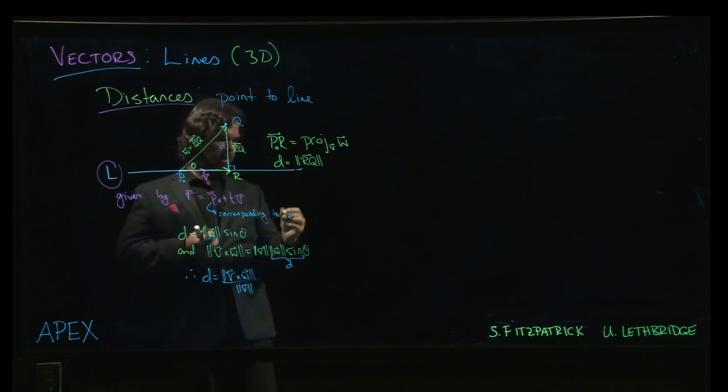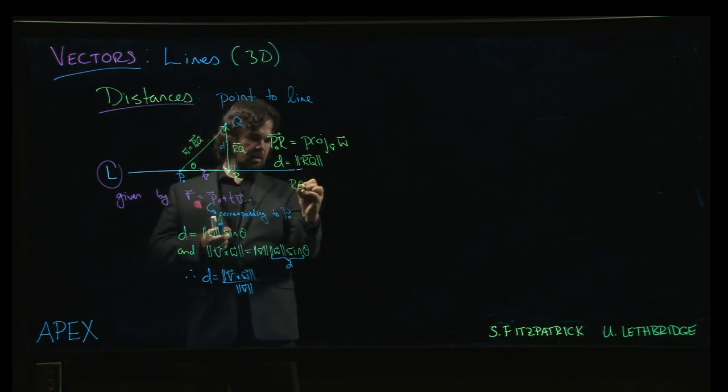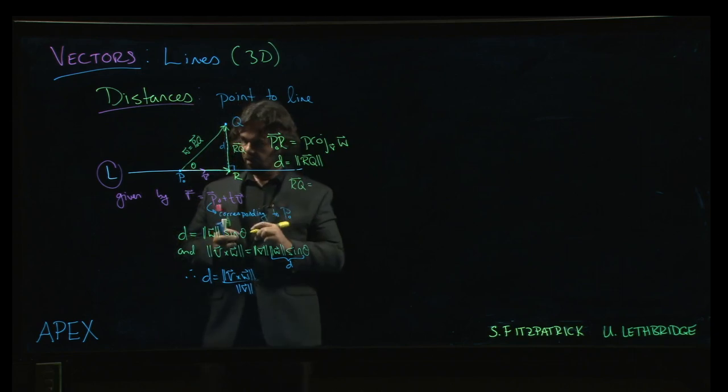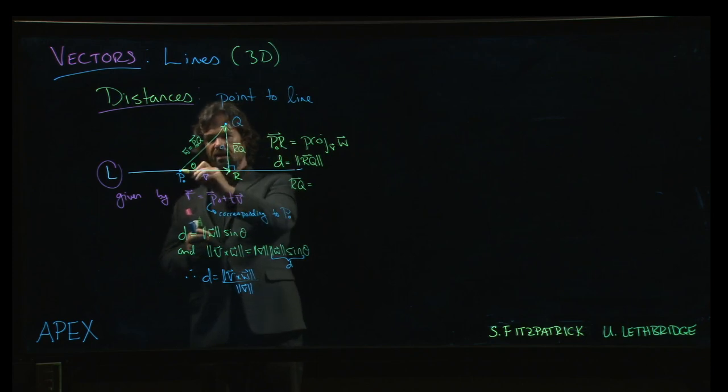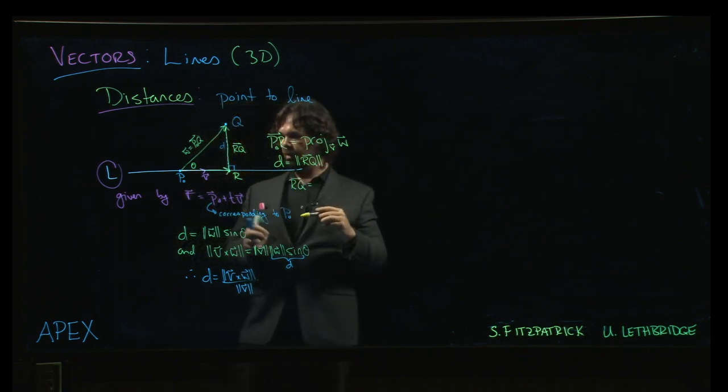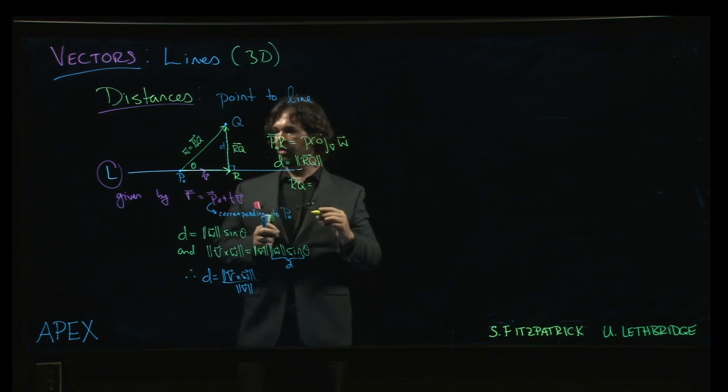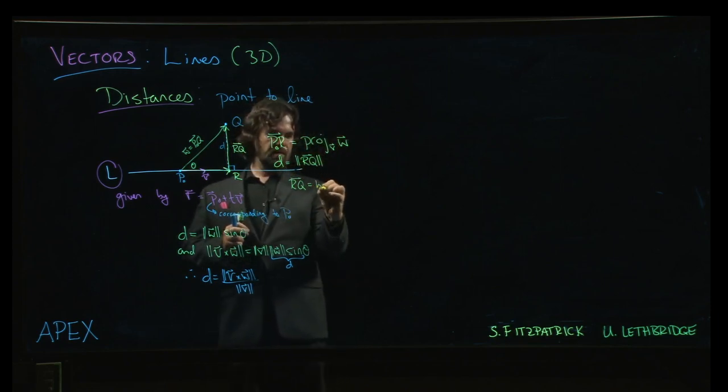This one here. And if you think back to the stuff that we did on orthogonal decompositions, it's the perpendicular part here. We're taking this vector from this point on the line to the point that we're interested in. We're just decomposing it into the parallel and perpendicular components with respect to the direction of the line.